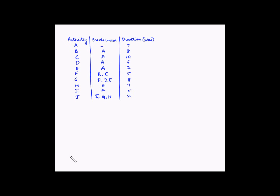Activity A does not have any predecessor, so it is not dependent on any activity before it can start. Clearly, activity A is the starting activity of this project. Let us draw the start event and give it number 1, then draw an arrow starting from event 1 and name it activity A, which takes 7 weeks.